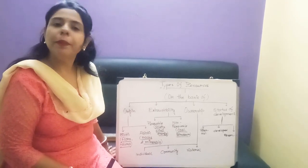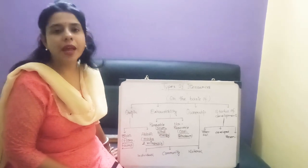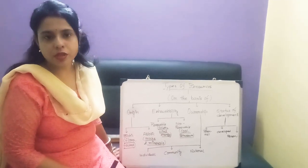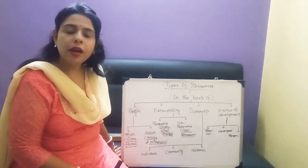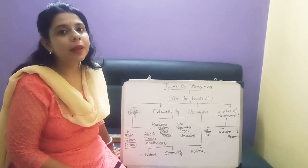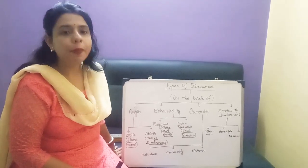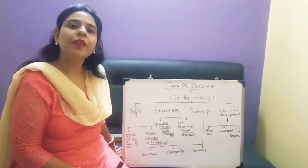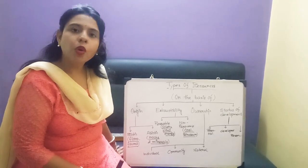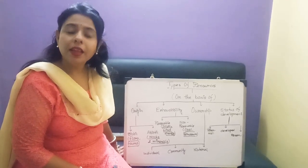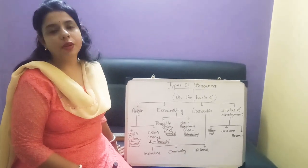I am giving one example. Coal is known as a resource. Coal is a substance. From coal, we generate thermal power, and from thermal power, we generate electricity. Coal has functionality. That's why coal is known as a resource.